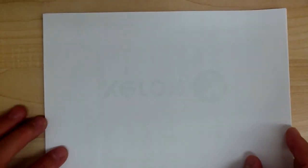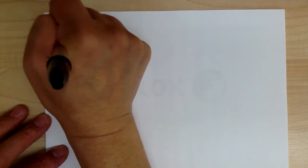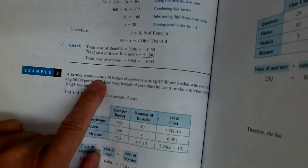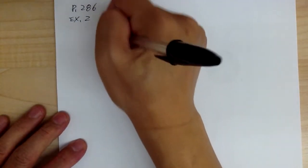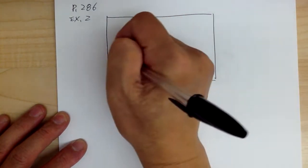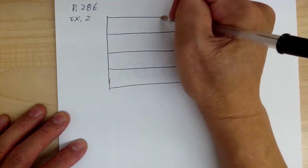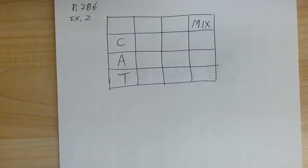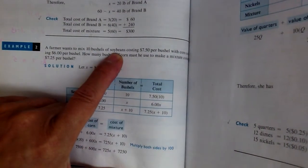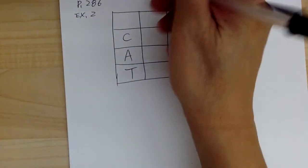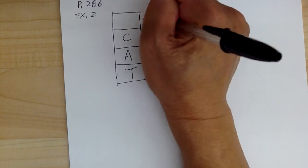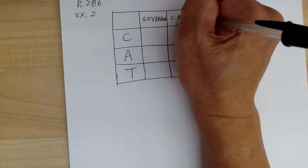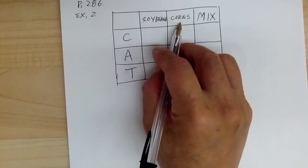Let's go to example 2. Again, read the problem first. It says a farmer wants to mix — right away you see the word 'mix,' so you know it's a mixture problem. So automatically make a rectangle, cut it in half both ways to create the table with C, A, T going down and the mix on the right. The items being mixed are soybeans and corn, so those names go across the top. You can use S for soybeans and C for corn.